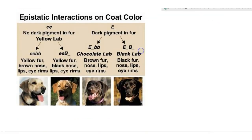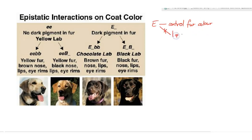Before we go any further, remember a few things we've learned about Labradors. First, the E gene can only control fur color — the dog needs it to deposit color in the fur. It does not control lip and nose color. From the lip and nose color, you can actually tell what B genes they have, because that's not affected by the E gene.